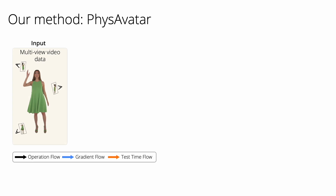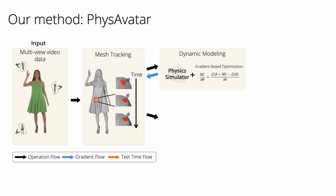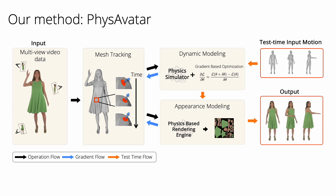Our approach takes the following steps. PhysAvatar takes multi-view videos and an initial mesh as input. We first perform dynamic mesh tracking. The tracked mesh sequences are then used for garment physics estimation with a physics simulator combined with gradient-based optimization, and appearance estimation through physics-based differentiable rendering. At test time, given a sequence of body poses, we simulate garment dynamics with the learned physics parameters and employ physics-based rendering to produce the final images.